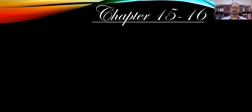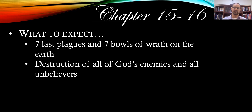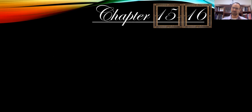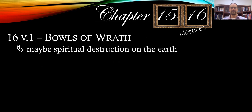Chapters 15 and 16 are placed together because they have to do with the same thing, and Chapter 15 is relatively short. What to expect? You see seven last plagues and then seven bowls of God's wrath poured out upon the earth in these chapters. It really has to do with the destruction of all of God's enemies, and that includes all unbelievers — those who do not trust in Jesus as their Savior. These bowls of wrath that start in Chapter 16 might refer to the spiritual destruction or spiritual punishment on the earth during these end times, the last few moments before Judgment Day comes.